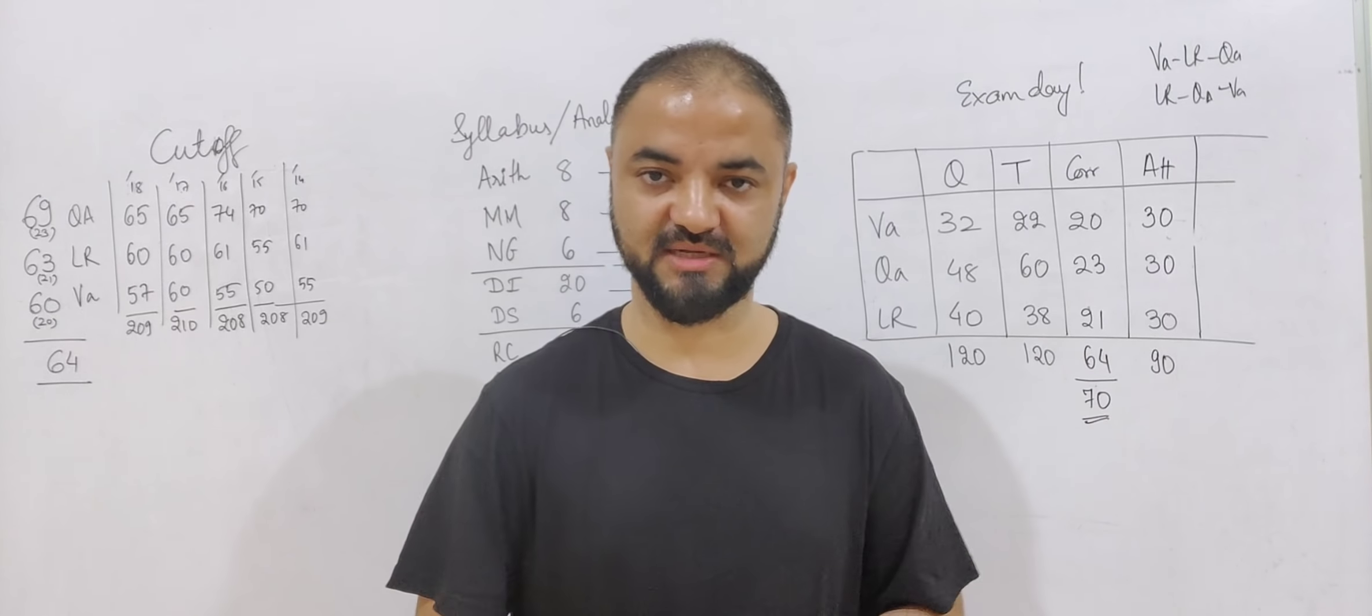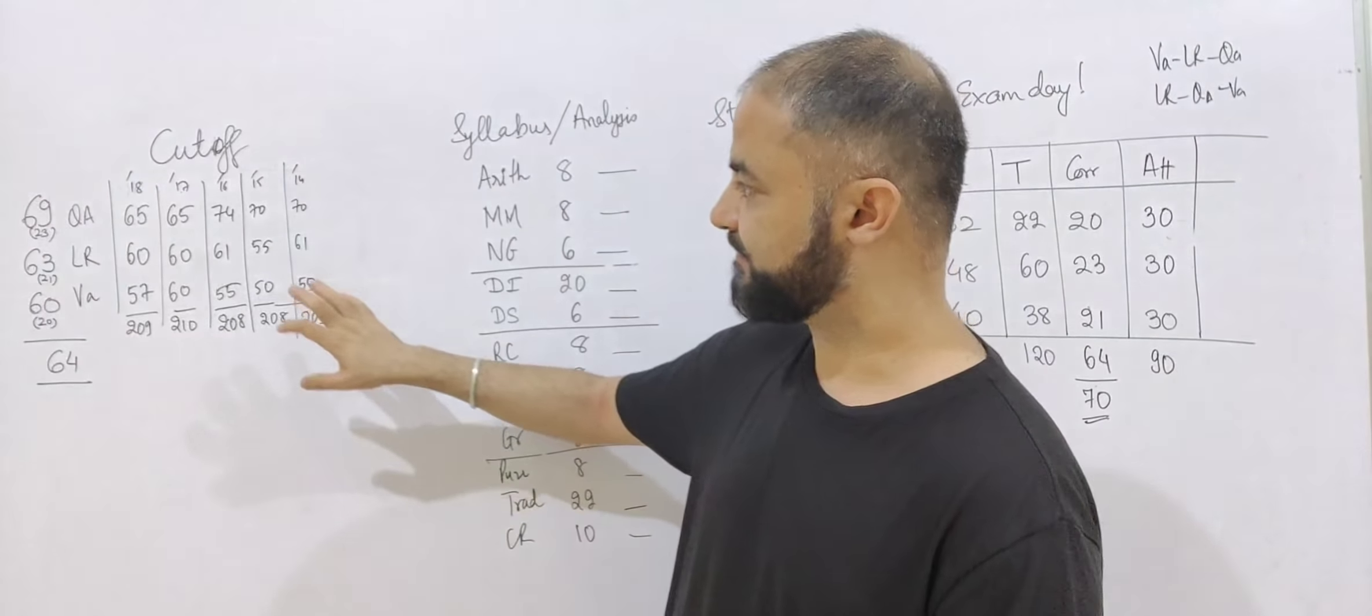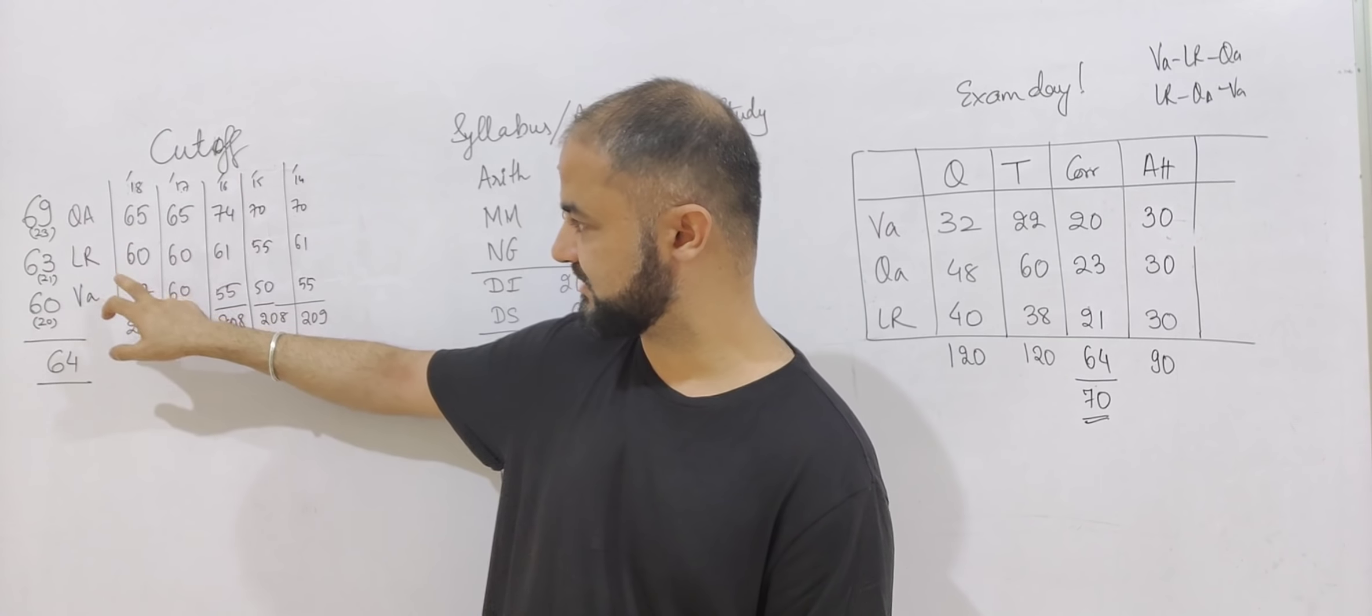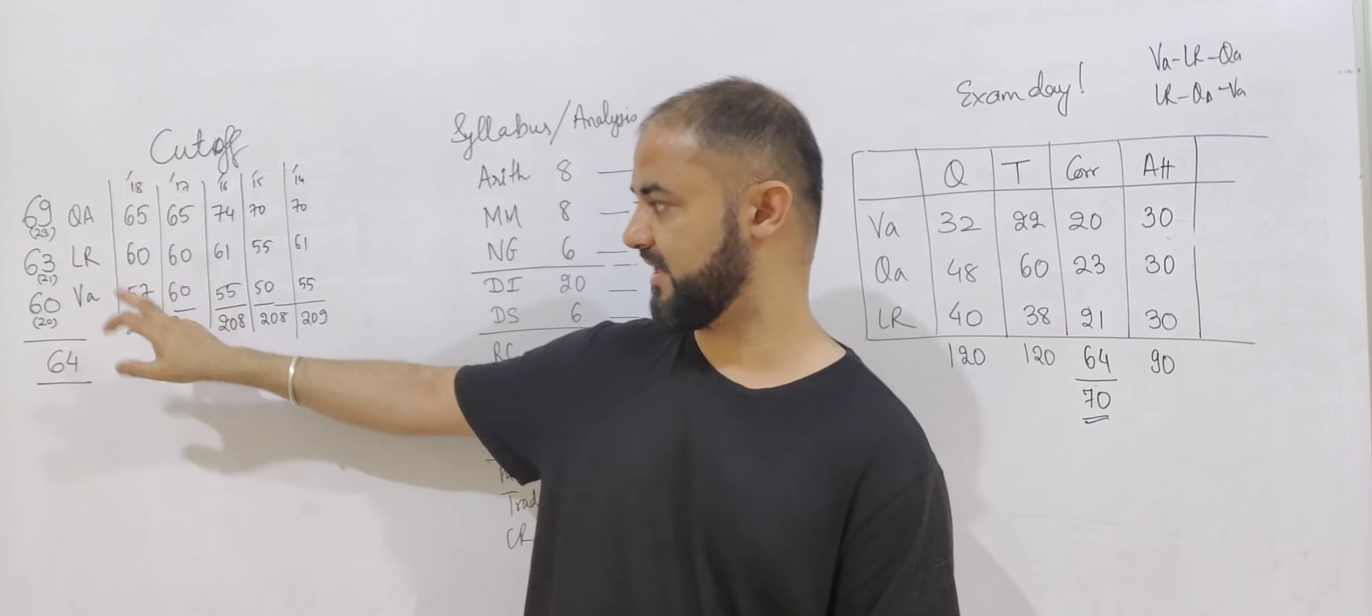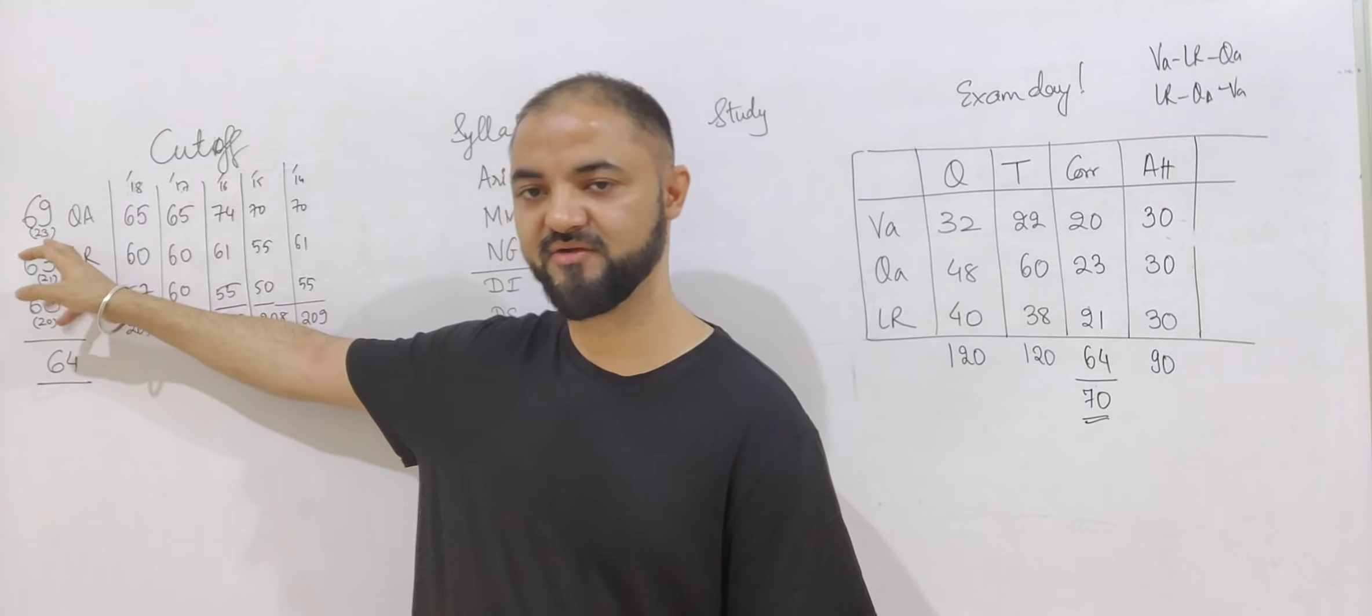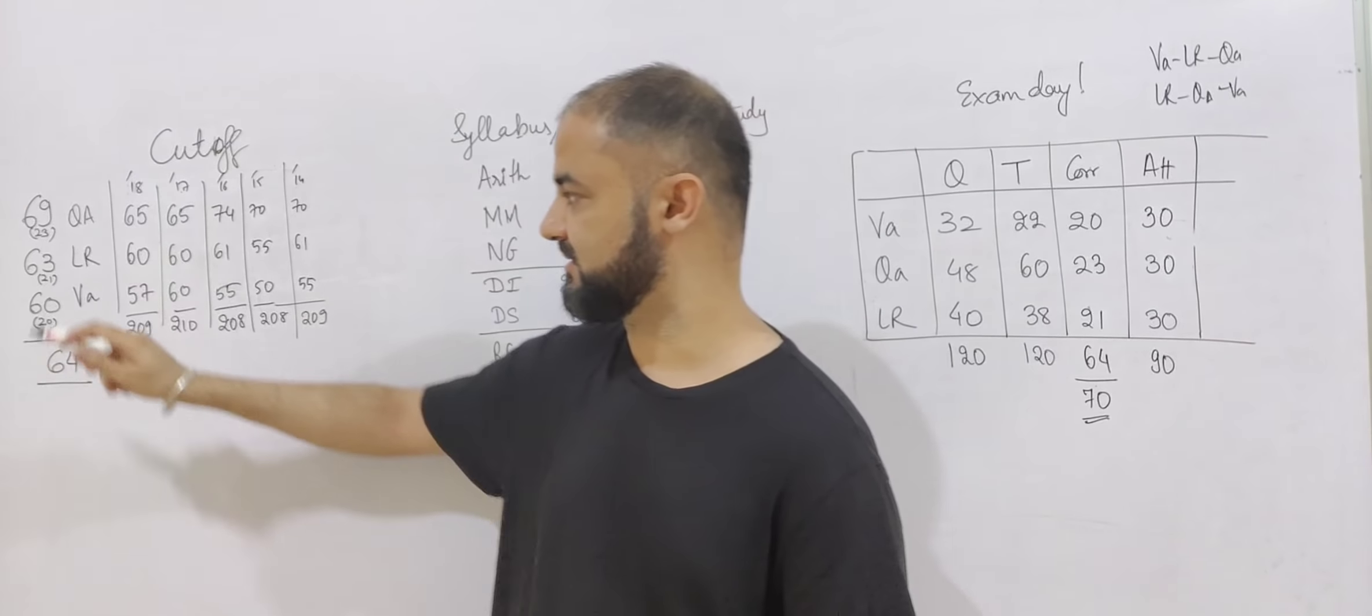Let's start with the first part, your cutoff part. Cutoff is changing every year. Last two-three years you can see here, quant is around 63-65 marks, logic is around 60, and verbal is 57. That's why we're keeping the target as 69, one more than that. So that's going to be our target this year.